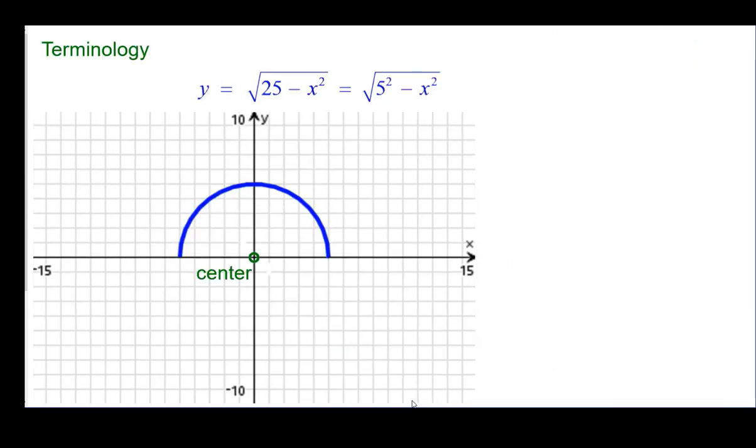So the terminology, we've got the center of the circle, which is not part of the circle but helps us get it. We also know that the radius is 5 in many different directions. From the center to any point on the circle is going to be that 5.